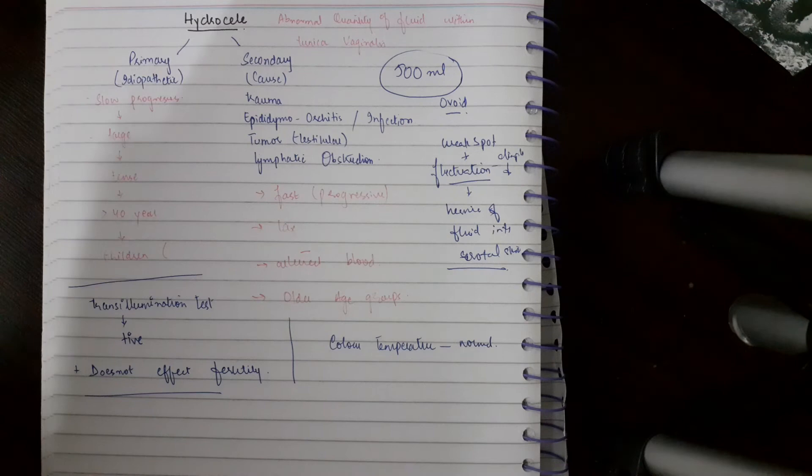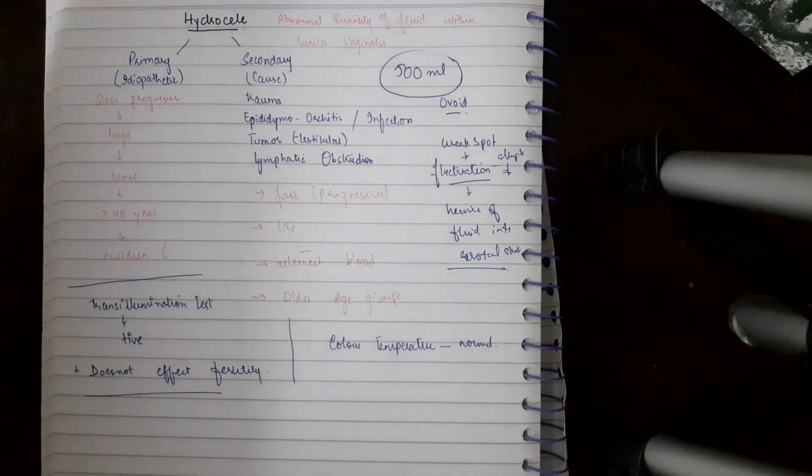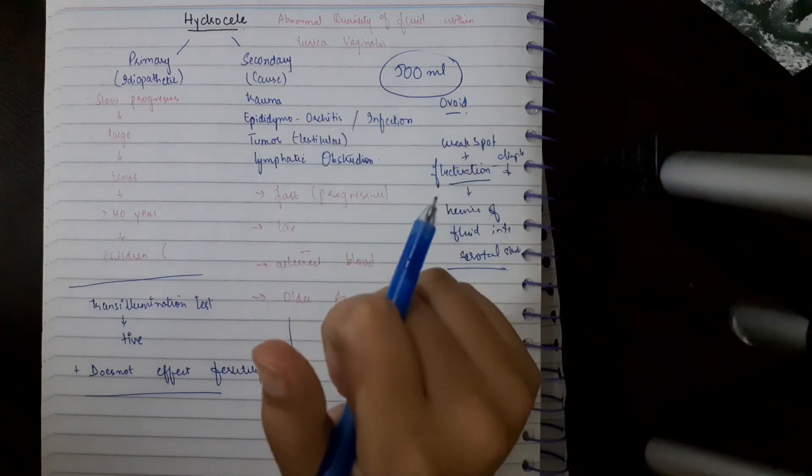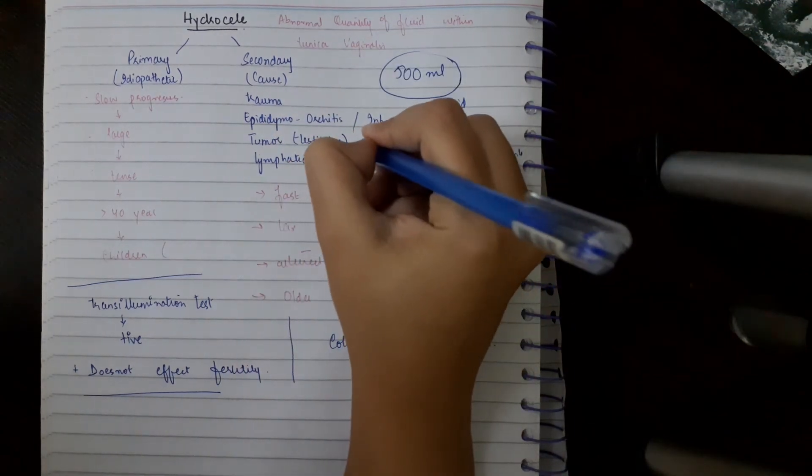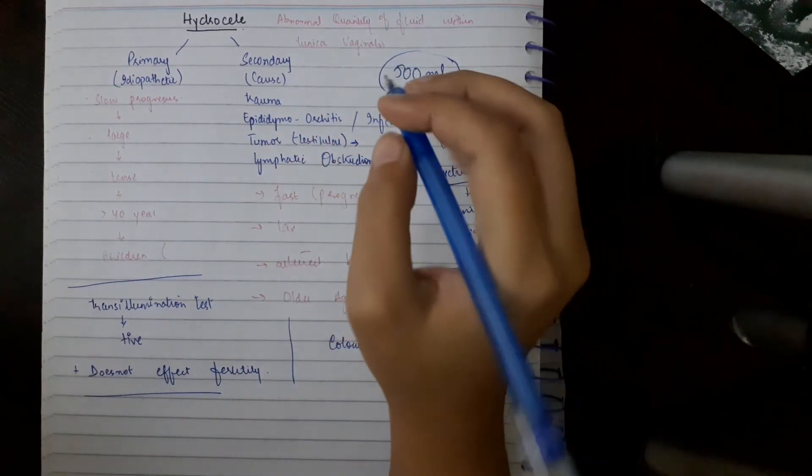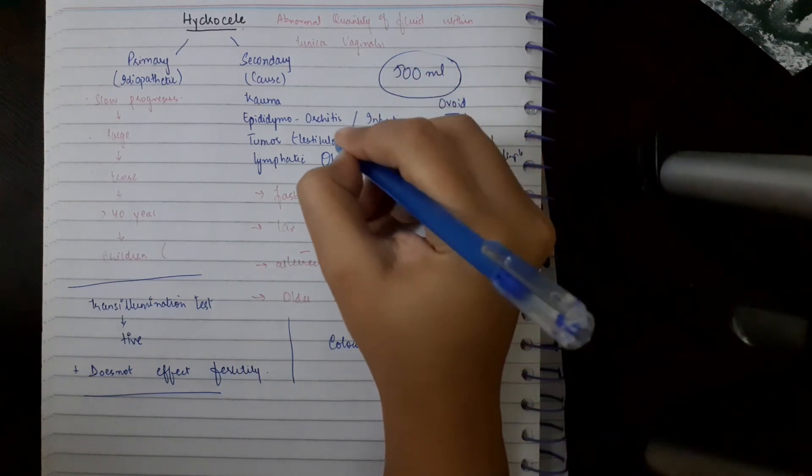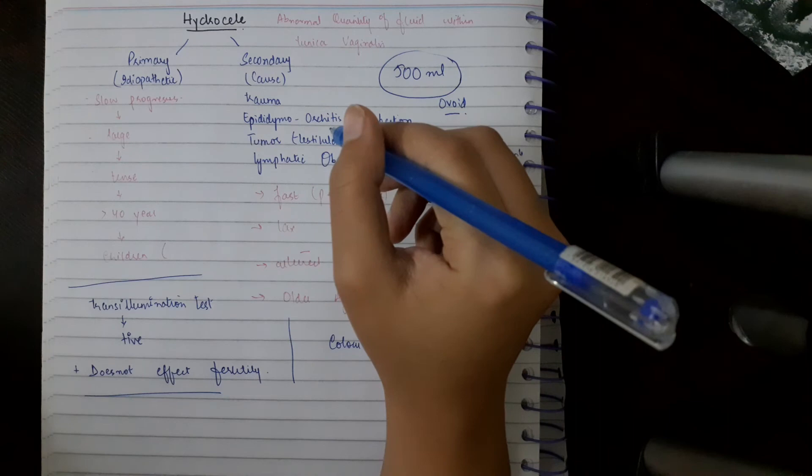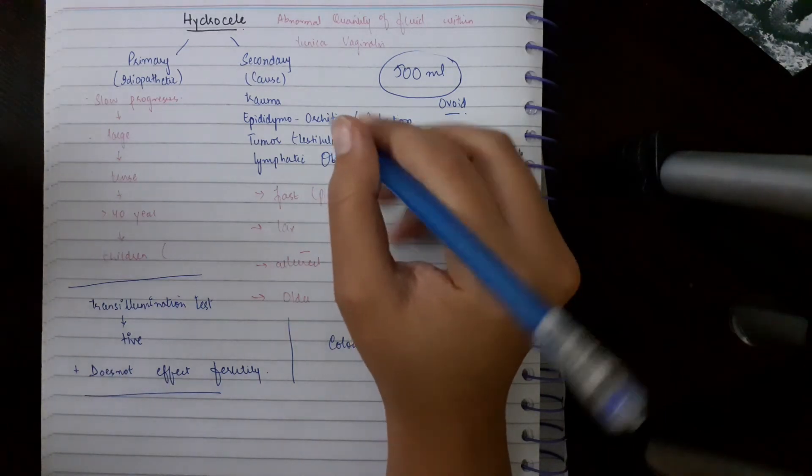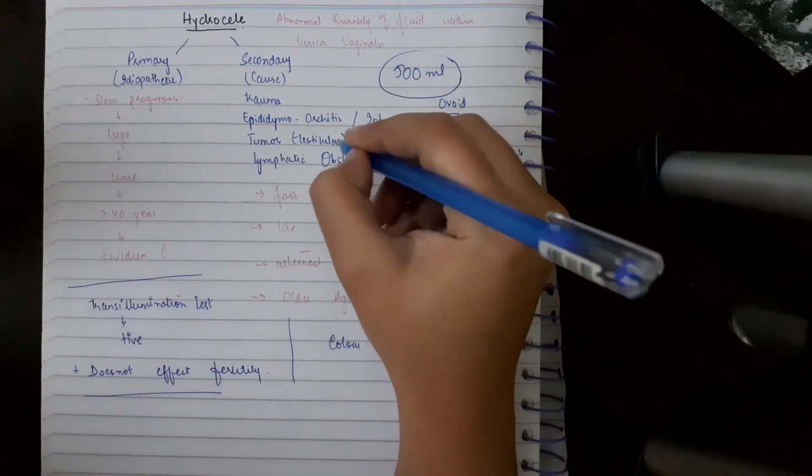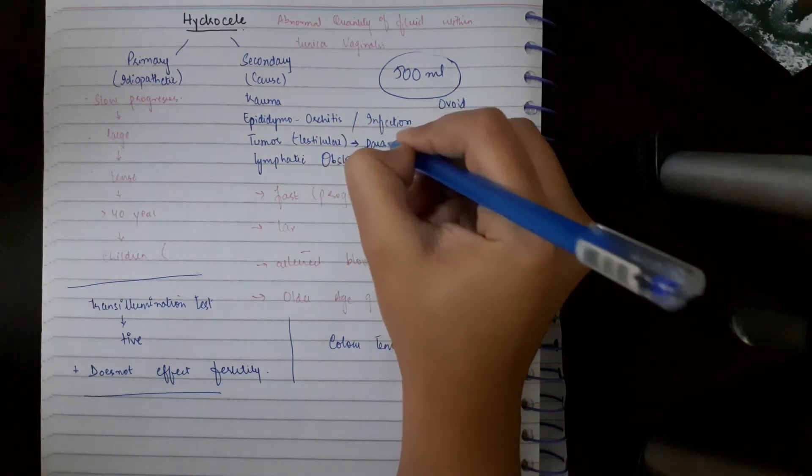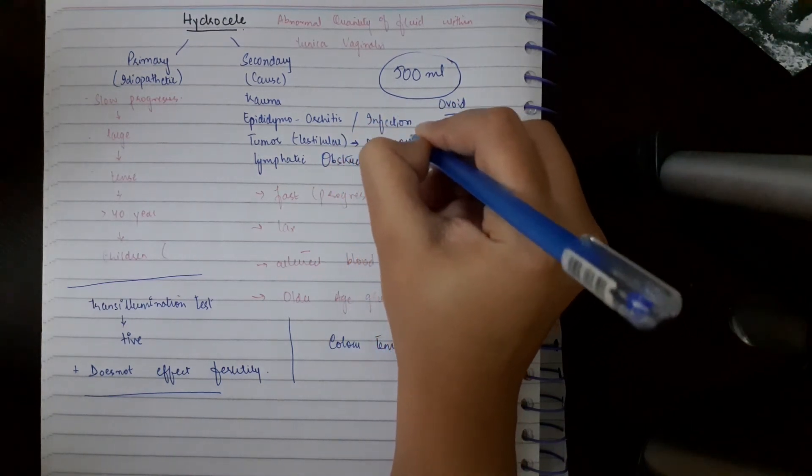Then the next point is about the para-aortic lymph nodes. In secondary hydrocele, when there is testicular tumor present, you always palpate for para-aortic lymph nodes because testicular cancer always drains into para-aortic lymph nodes. So to rule out testicular tumor, you have to palpate the para-aortic lymph nodes.